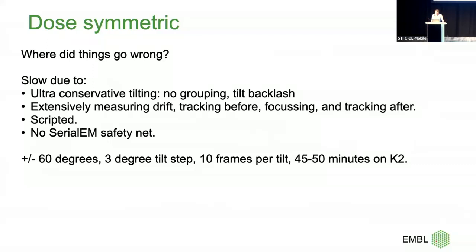I was extensively measuring drift because we were on a K2 on a Krios G1 with a dual-axis holder. We would tilt, track before, autofocus, take the image, then take another tracking image after — only then tilt. The tracking-after step kept image shifts really small. It was scripted, which makes it slow, and there's no SerialEM safety net: if a grid bar comes in you get black images and the script just plows on, whereas SerialEM nowadays detects a grid bar and finishes the other side — saving a lot of time.